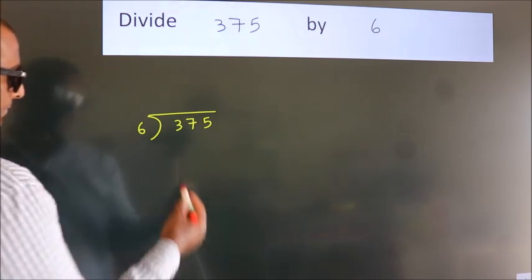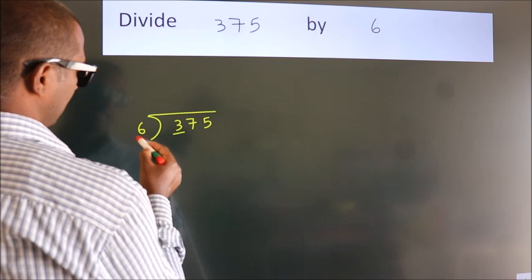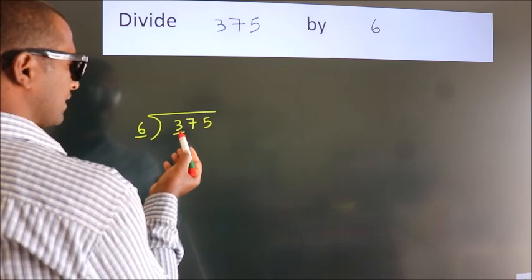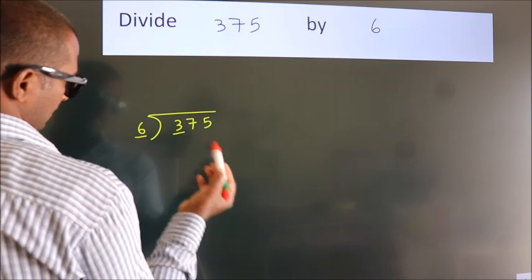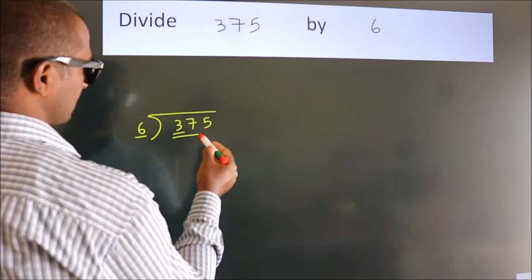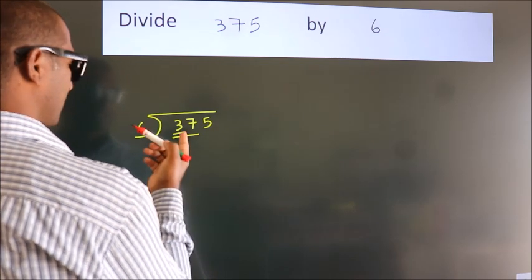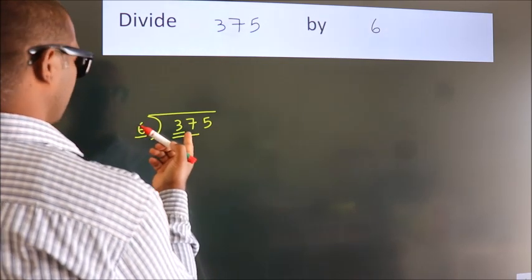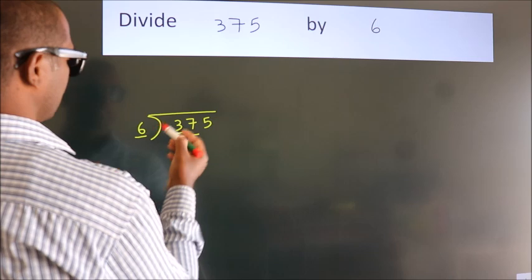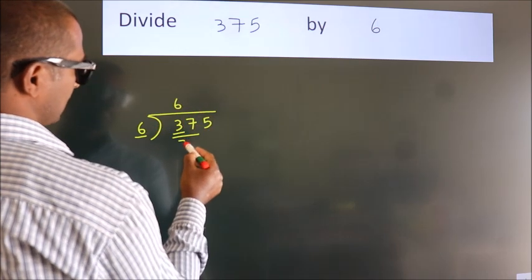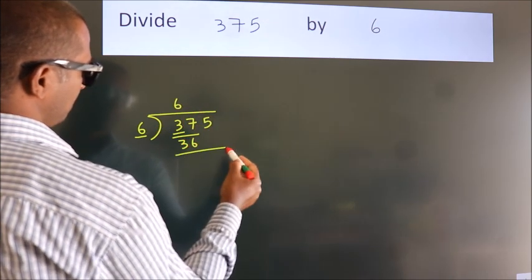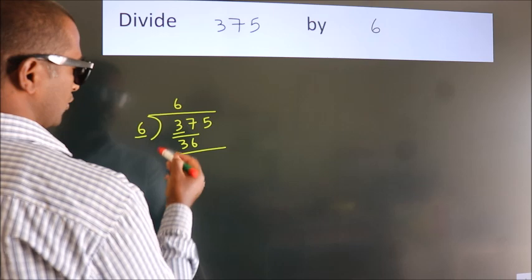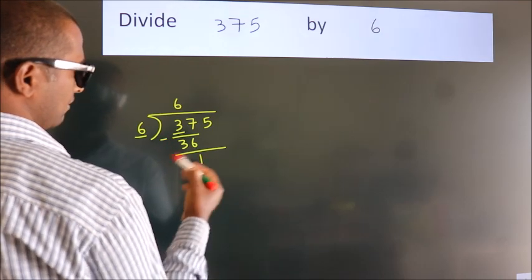Next, here we have 3. Here, 6. 3 is smaller than 6, so we should take 2 numbers: 37. A number close to 37 in the 6 table is 6 sixes, 36. Now we should subtract. We get 1.